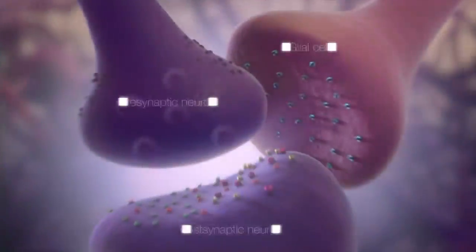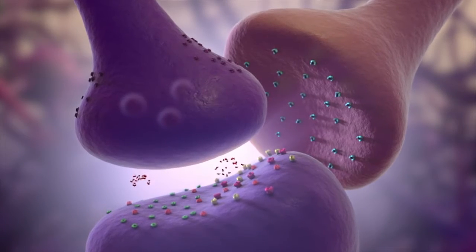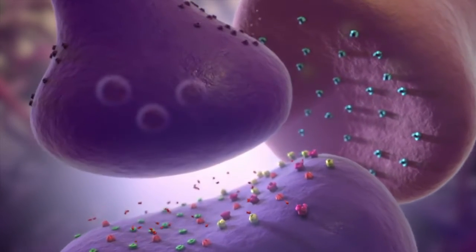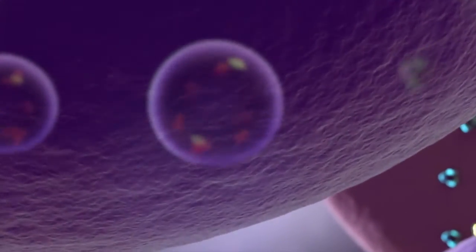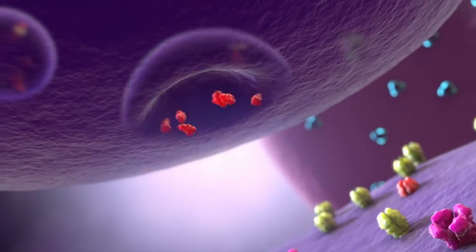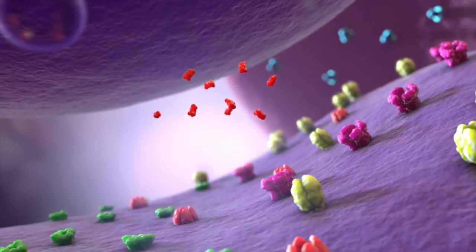Let's take a closer look at normal glutamate signaling. As an action potential propagates into the terminal of a presynaptic neuron, vesicles storing glutamate fuse with the cell membrane and release glutamate into the synapse.